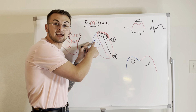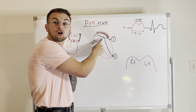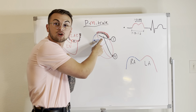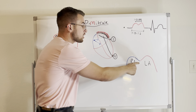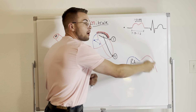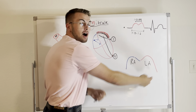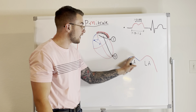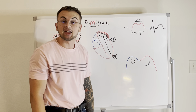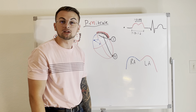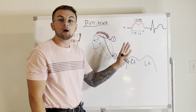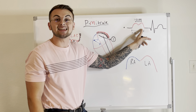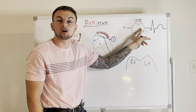Now imagine that instead of a normal left atria, we have an enlarged left atria. This creates an impulse as well that heads towards lead 1 and lead 2, creating a second positive deflection on the EKG. The result is a notched P-wave that is also called an M-wave — think M for mitral, M for left atrial enlargement. This M-wave is not very common, but it can be highly indicative that your patient's left atria has become enlarged.